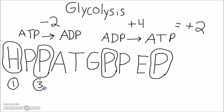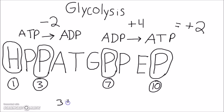So once again, the key enzyme positions are 1, 3, 7, and 10. You can remember this by the equation 3 plus 7 equals 10, and there's a 1 in there — so 1, 3, 7, 10.